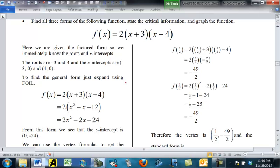We can get the general form pretty easily by using FOIL. X plus 3 times X minus 4 is X times X is X squared. We get 3X minus 4X is negative 1X, and 3 times negative 4 is negative 12. Distribute the 2.